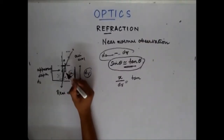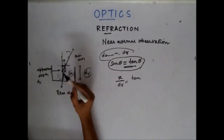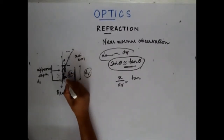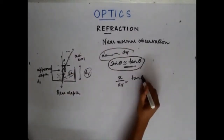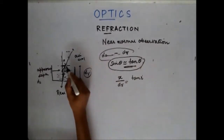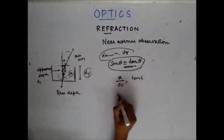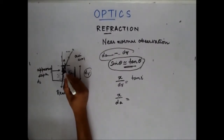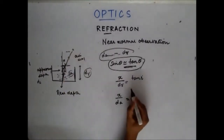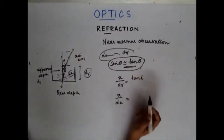This angle is i, so this angle is also i. tan of angle i equals x by dA, and x by dA is this angle. So x by dR is tan i.